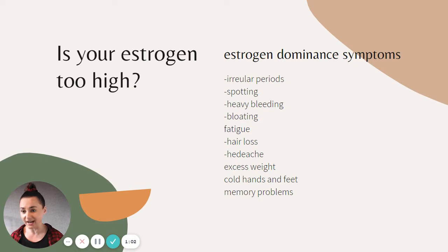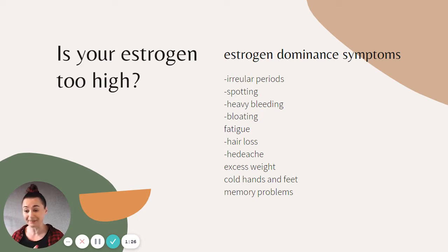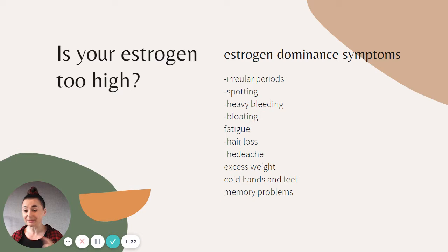Is your estrogen too high? There are some symptoms which are identical to the symptoms of endometriosis, because with endo, too high estrogen is the main factor. These include irregular periods, spotting, heavy bleeding, bloating, fatigue, hair loss, headache, excess weight, cold hands and feet, and memory problems.